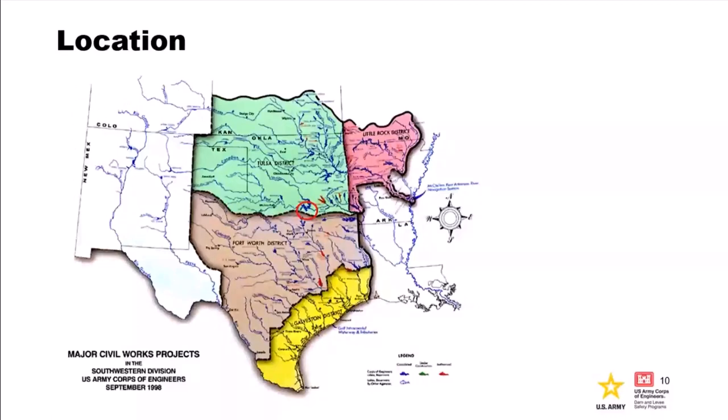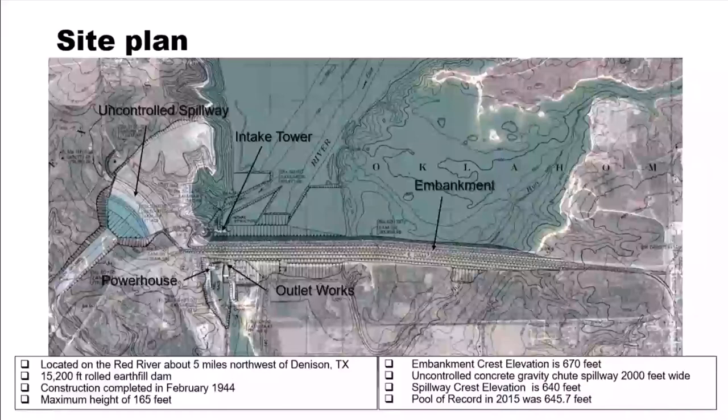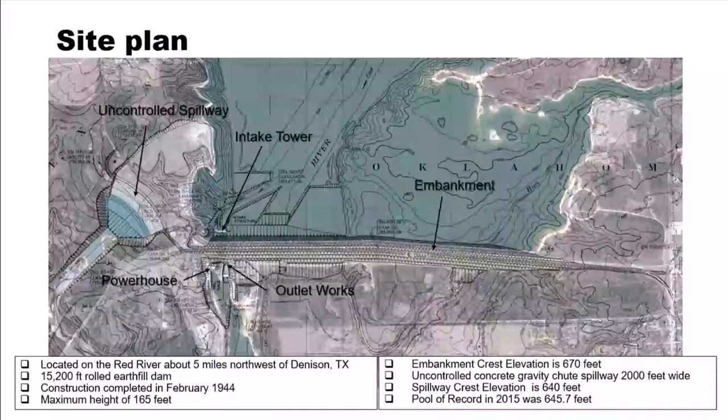Denison is located right there, on the border of Texas and Oklahoma. Here is our site: big long embankment, intakes over here, uncontrolled spillway with a stilling basin, powerhouse, outlet works. It's on the Red River, about 15,000 feet long, completed in 1944, 165 feet tall. Embankment crest elevation 670, spillway crest 640. The pool of record was 2015, fairly recent, at 645.7.